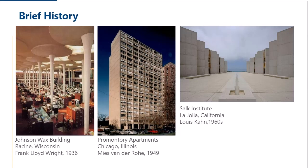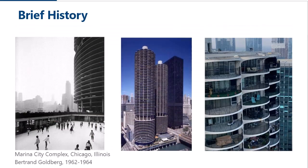More complicated examples include Bertrand Goldberg's Marina City Complex in Chicago, Illinois, which was a combination of hotel, theater, skating rinks, parking garage, and residential structure. Note that the facade and balconies of the towers are curved edges — they are really the character-defining feature of the building, but when it comes to repair, that makes it more difficult.